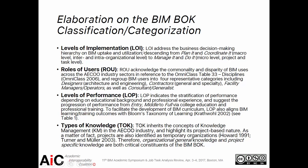The levels of implementation tend to address the business decision-making hierarchy on BIM uptake and utilization, descending from Plan It and Coordinate It, which really examine the macro, inter, and intra-organizational level, then to Manage It and Do It, which look at majorly the macro level, project, and task level. The roles of users is meant to acknowledge the commonality and disparity of BIM uses across equal industry sectors — we actually use reference to the OmniClass Table 33 disciplines. Levels of performance indicate the stratification of performance depending on educational background as well as professional experience, suggesting progression from entry to middle to full.